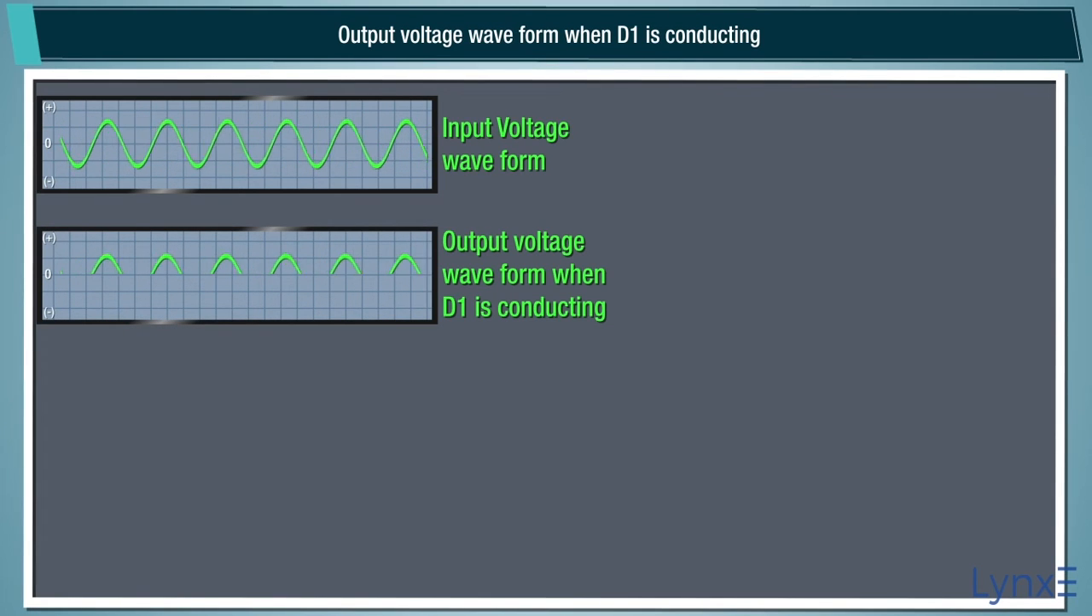The input and output waveform of the full wave rectifier as follow. Input voltage waveform, output voltage waveform when D1 is conducting, output voltage waveform when D2 is conducting, combined output voltage waveform, load current waveform.